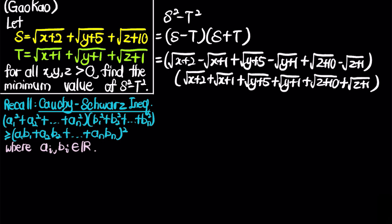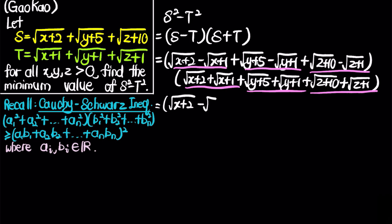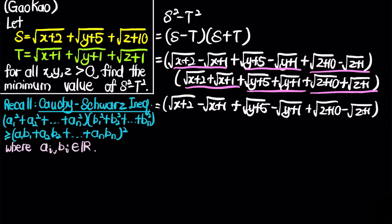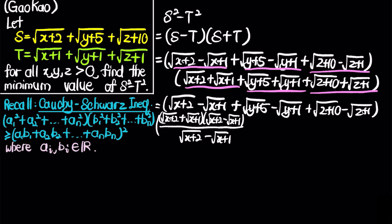Observing these grouped terms, they look similar to each other with different signs — this suggests they are radical conjugates. We rewrite the first product by multiplying each group by its radical conjugate. For example, (√(x+2) − √(x+1)) = (√(x+2) + √(x+1)) · (√(x+2) − √(x+1)) / (√(x+2) − √(x+1)). We do the same for the y and z terms: (√(y+5) + √(y+1)) · (√(y+5) − √(y+1)) / (√(y+5) − √(y+1)), and similarly for √(z+10) and √(z+1).